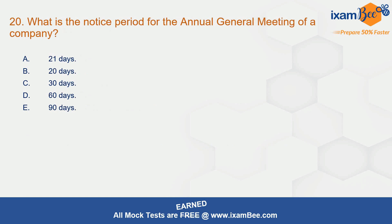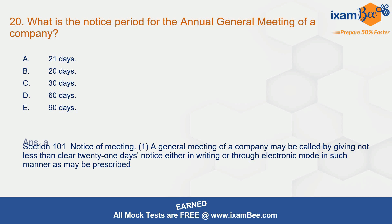Question 20: what is the notice period for the annual general meeting of a company? The correct answer is A — 21 days. Section 101 covers the notice of the meeting.